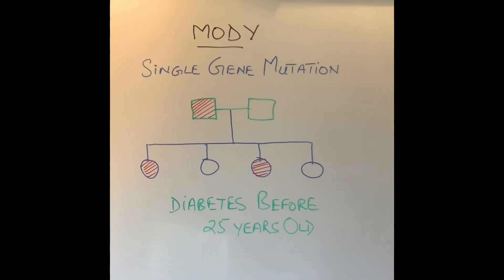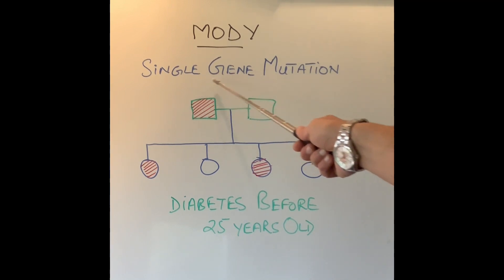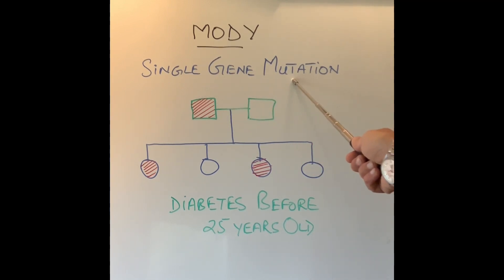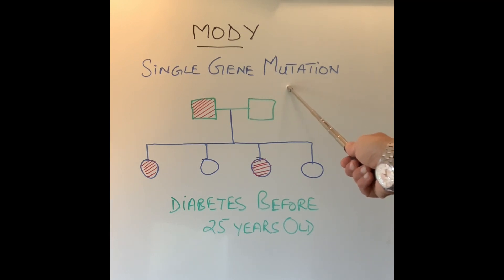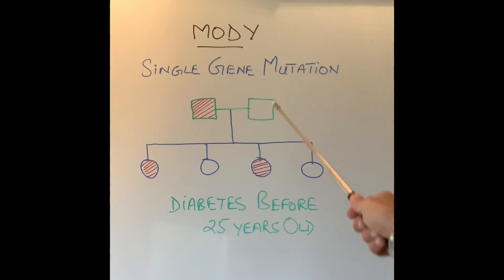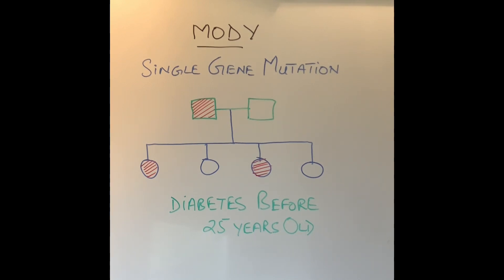The first thing to understand is what causes MODY diabetes. MODY is caused by a single gene defect or mutation. There are a few genes in our body which control the production of insulin by our pancreas. If those genes are not working properly, the pancreas will not be able to produce enough insulin for us to control our blood sugar, and we develop diabetes.